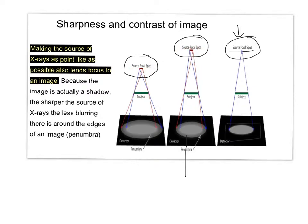Having a wide focus point means that you get light coming from lots of different directions, therefore causing overlaps in the light. So if this is our subject — this is what we're taking a picture of — the light can overlap in varying intensities to cause a shadow. But if you have a really small focal point, then you get a sharp edge because there isn't shadow forming. So making the source of x-rays as point-like as possible lends focus to an image because the image is actually a shadow. The sharper the source of x-rays, the less blurring there is around the edges of the image. So that's going to increase the sharpness of your picture.